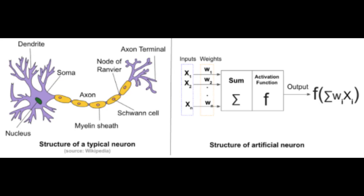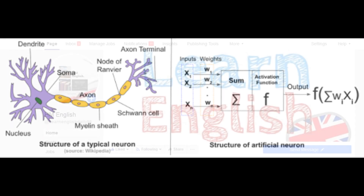Good afternoon, good evening students. Welcome back to the channel. Today we're back with another lecture concerning psycholinguistics. This is the final part concerning the chapter of psycholinguistics — lecture number four, entitled 'The Neuronal Structure and the Neuronal Network.'